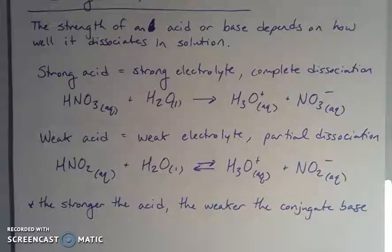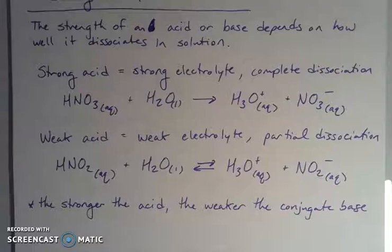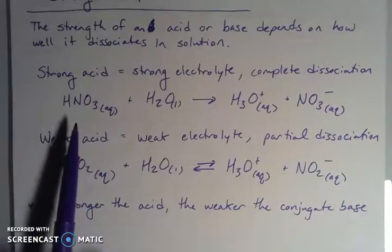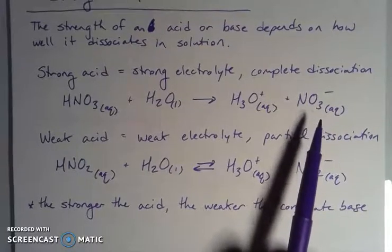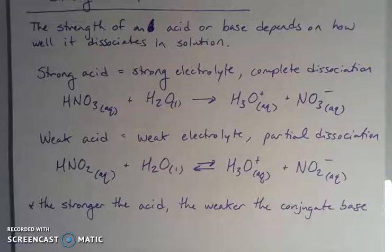An interesting feature, going to the Bronsted-Lowry definition of proton donation and conjugate acid-base pairs: the stronger the acid that we have, the weaker its conjugate base is going to be. If I have a strong acid like nitric acid, the conjugate base is the nitrate ion. That conjugate base is a very weak conjugate base, which means that it's not going to do much in solution - it's not going to change the pH by a whole bunch. We'll get into why and how in future videos.